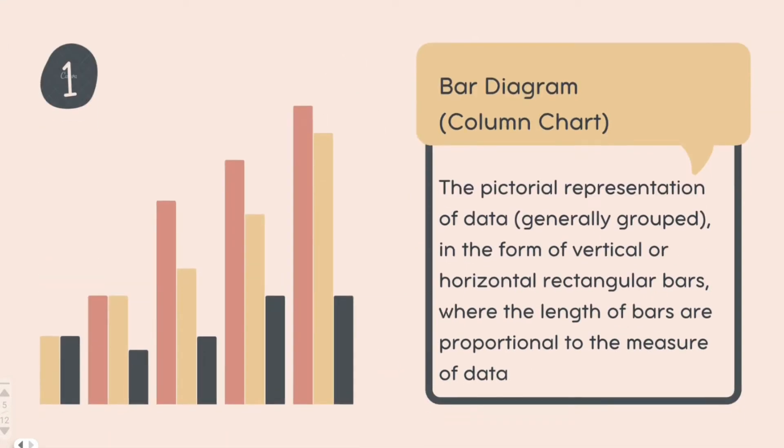The very first one was a bar diagram, also called a column chart. This is something we've all seen. It's a pictorial representation of data, generally grouped data, in the form of vertical or horizontal rectangular bars. The length of these bars represents the frequencies.